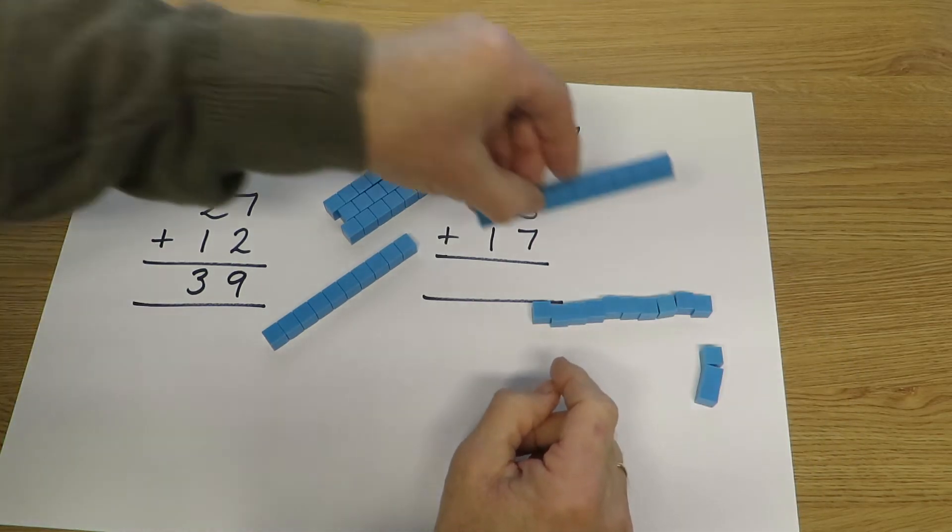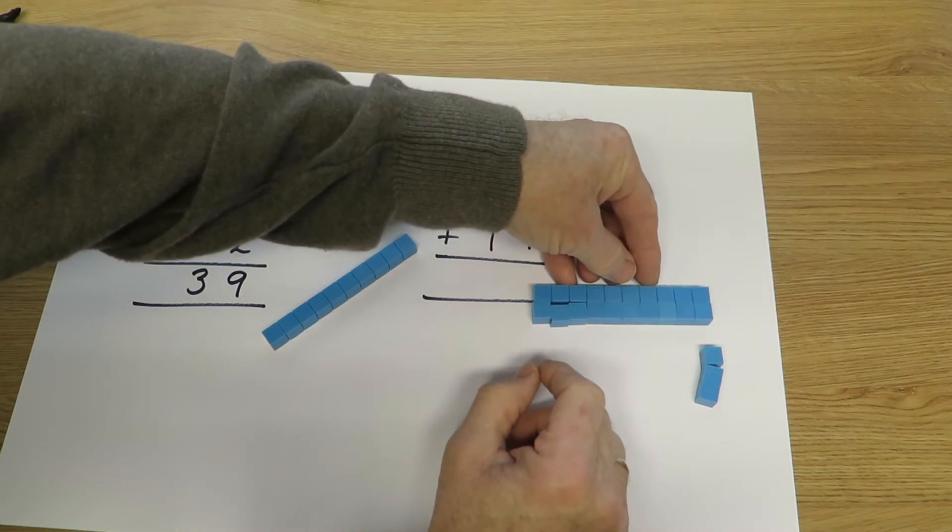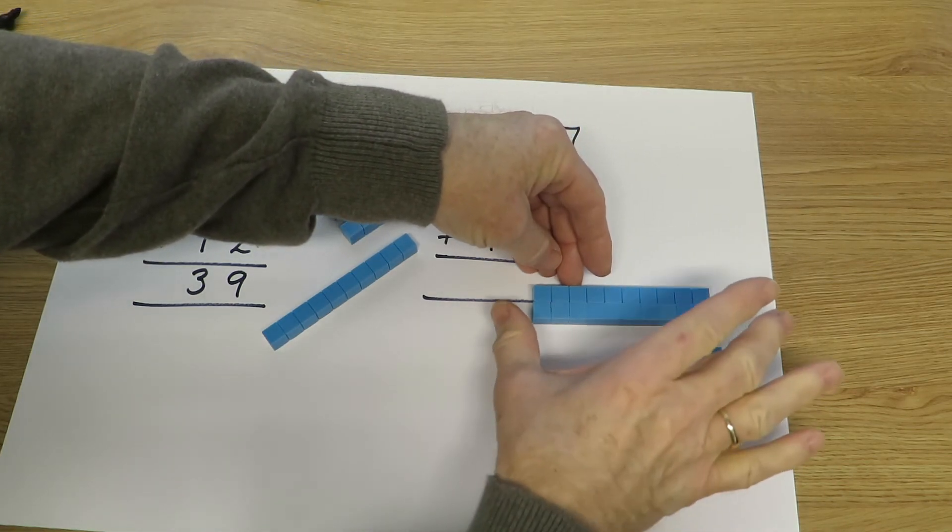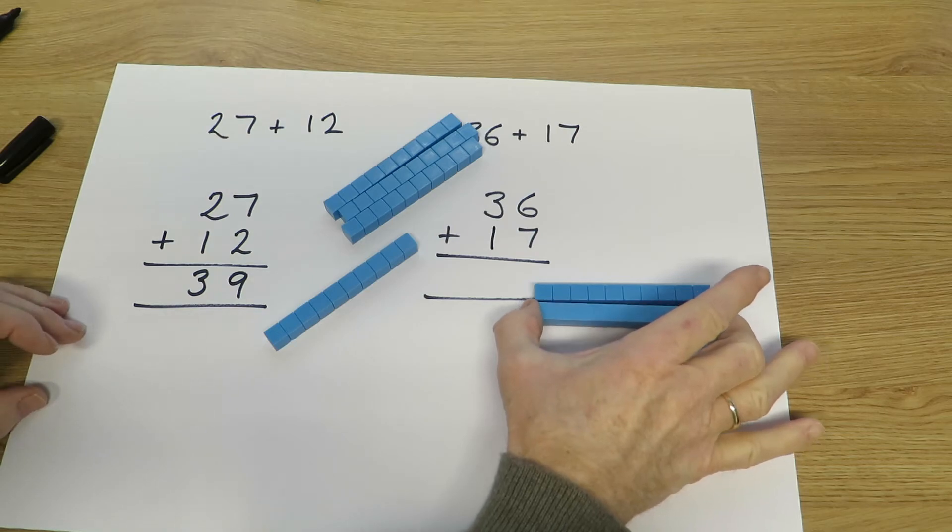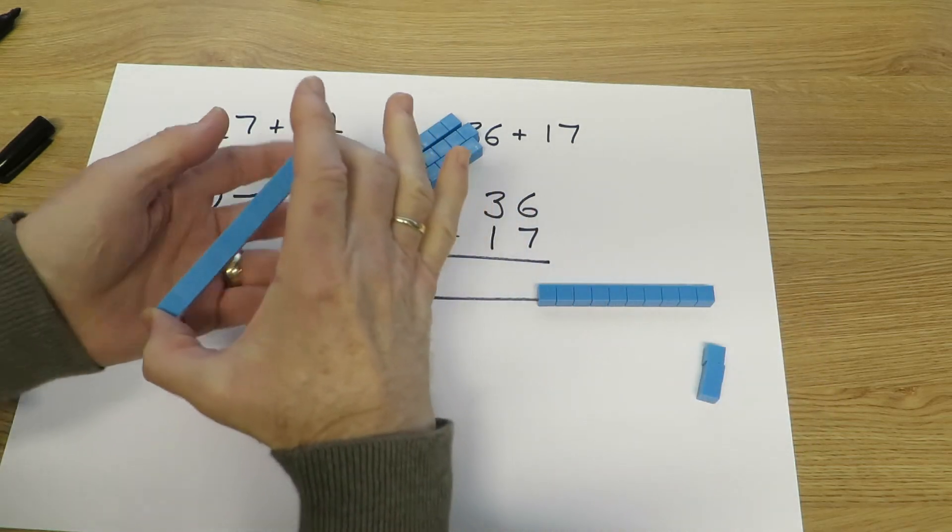Combining units first, we've got 7 and 6, or 6 add 7, which they will probably know is 13. Those 10 units there are enough to swap for a 10, they're exactly the length of a 10, so we're getting rid of those and bringing in an extra 10.